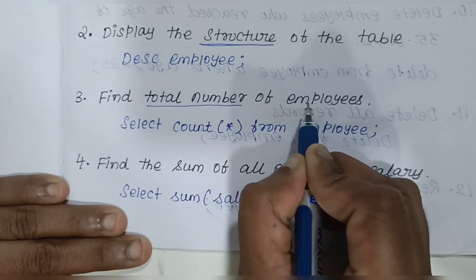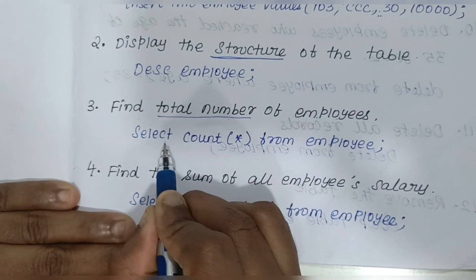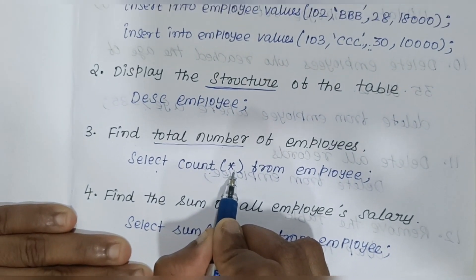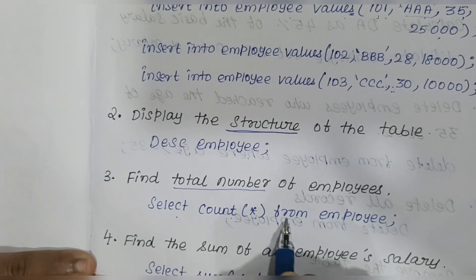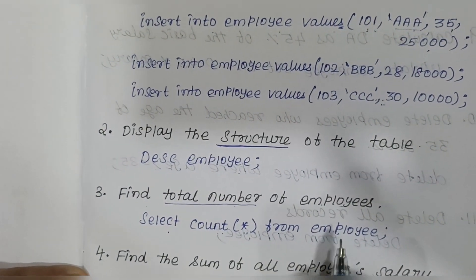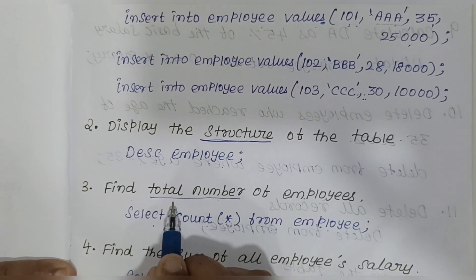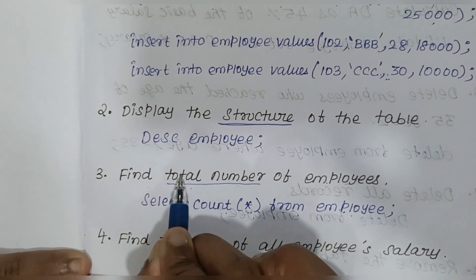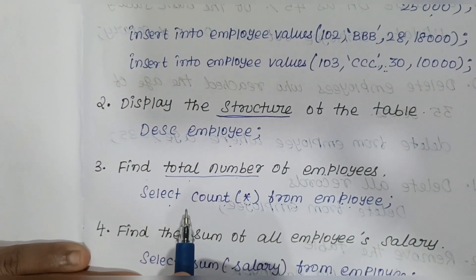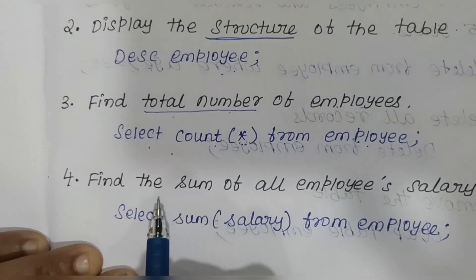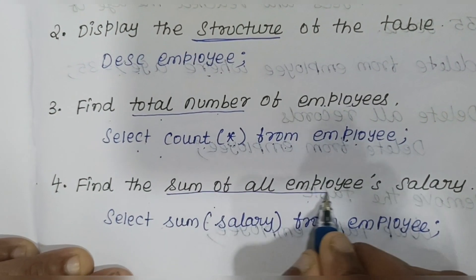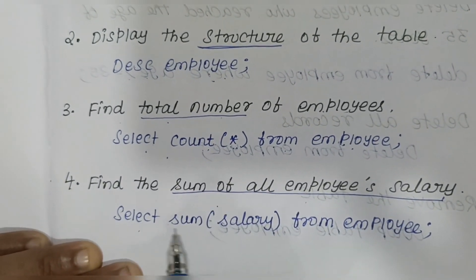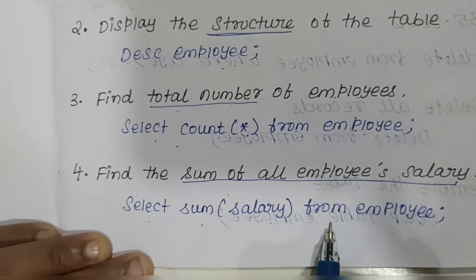The fourth question is to find the total number of employees. Use SELECT COUNT(*) FROM employee — COUNT(*) counts all rows in the table. Whether they say 'total number' or 'count the number of employees', the answer is the same. The next question is to find the sum of all employees' salaries: SELECT SUM(salary) FROM employee, which adds up all salary values and gives the aggregate.